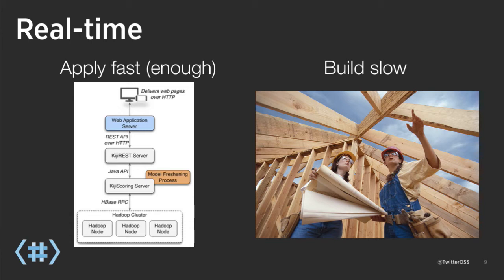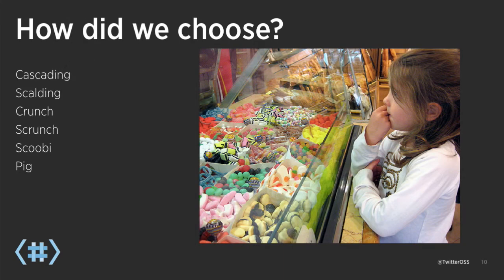Notice I said 'something like MapReduce.' We wouldn't use Java MapReduce, because I think people have gone to great lengths to avoid using that. There are a number of projects to choose from when you're trying to avoid plain vanilla Java MapReduce — it's kind of like being a kid in a candy store. In the Kiji project we of course chose Scalding, but we could have chosen Cascading, Crunch, Scrunch, Scooby, or Pig.